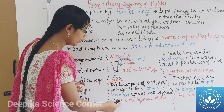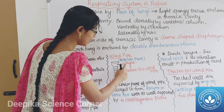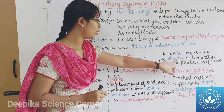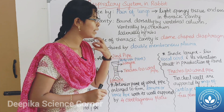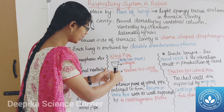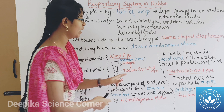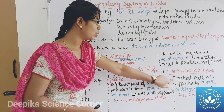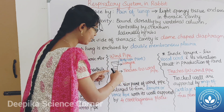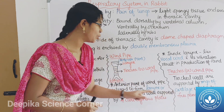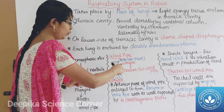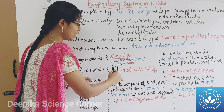The larynx is also called the voice box. Its wall is formed by four cartilaginous plates. The larynx contains the vocal cords, which vibrate to produce sound. The trachea wall is supported by rings of cartilage, which allow free passage of air.